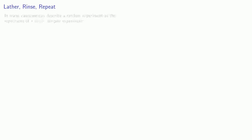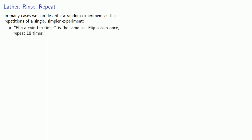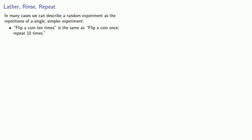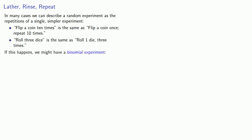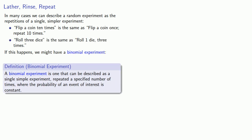In many cases, we can describe a random experiment as the repetitions of a single simpler experiment. For example, flipping a coin ten times is the same as flipping a coin once repeated ten times. Or rolling three dice is the same as rolling one die three times. If this happens, we have a binomial experiment.